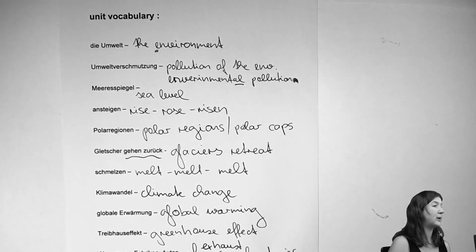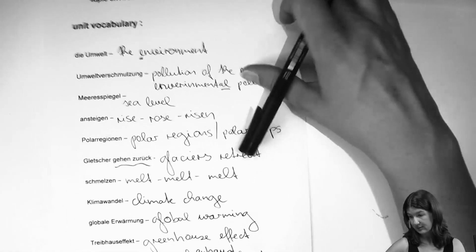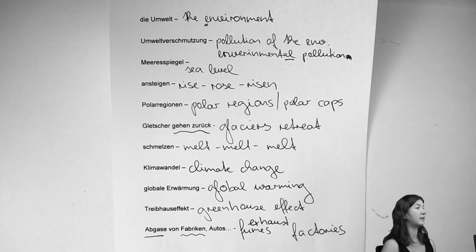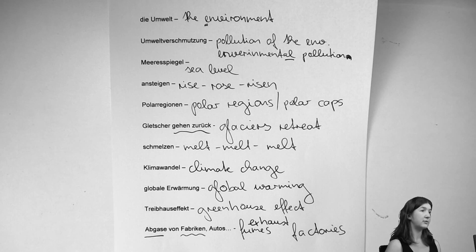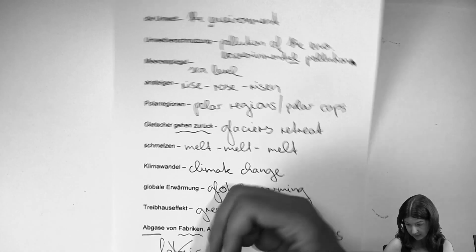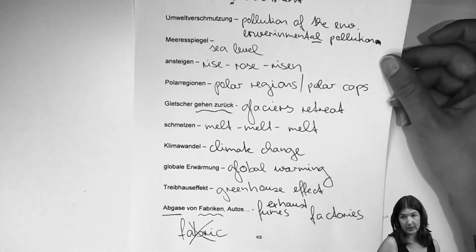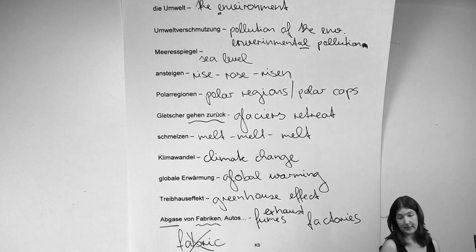The false friend I was talking about: 'Fabriken' are factories. There is a word out there spelled like 'fabric,' but that's not the word we're looking for — it means something totally different. Make sure that you don't use it or don't be tempted by what seems to be the correct word just because you make a conclusion from German.